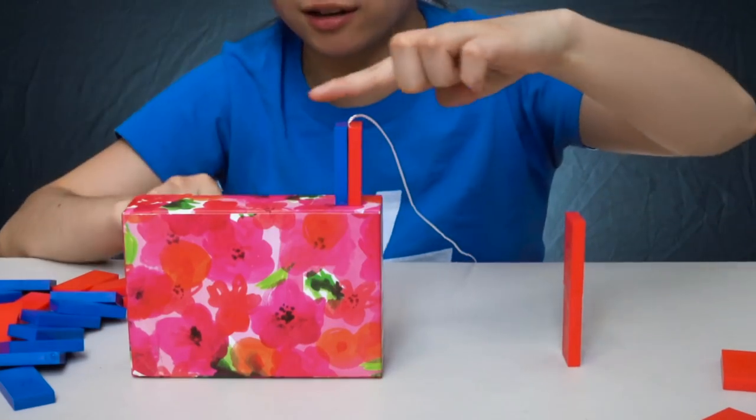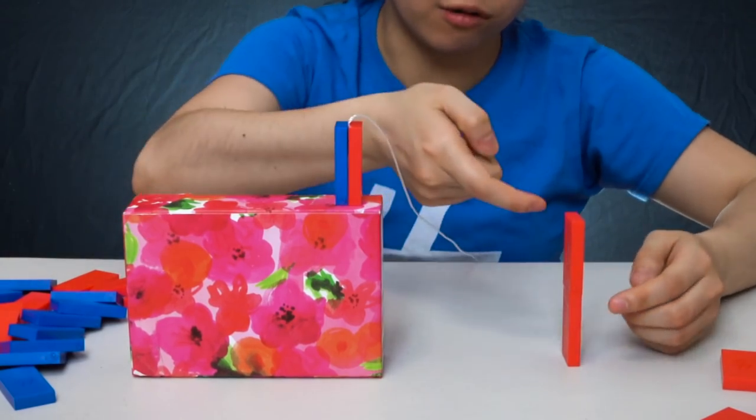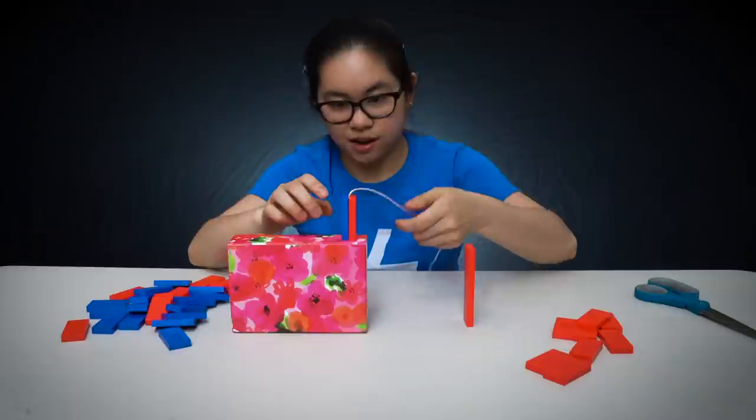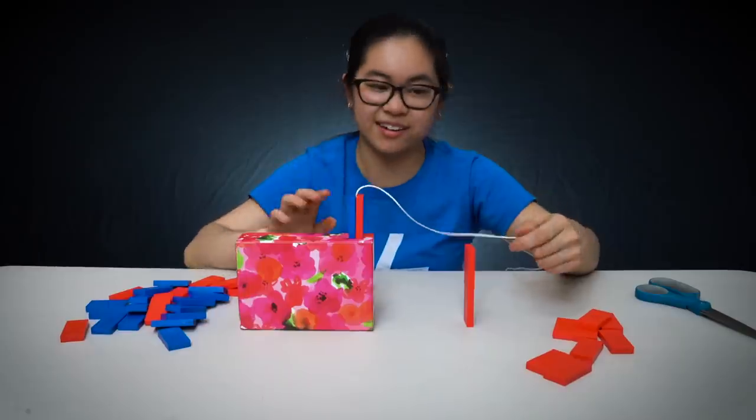I recommend putting this domino in the opposite direction that the tape hinge is going. So if the line is going like this on top, I want the line on the bottom to go in this direction, and that's just going to give it way more leverage when it topples.